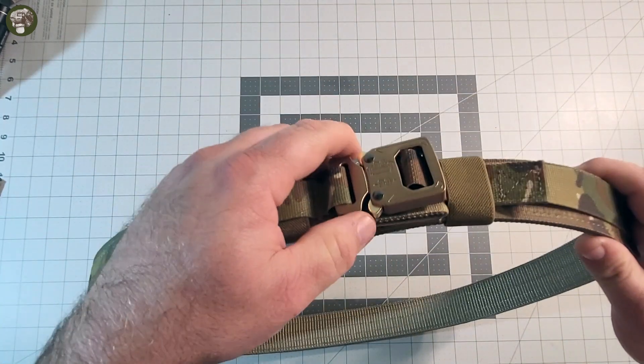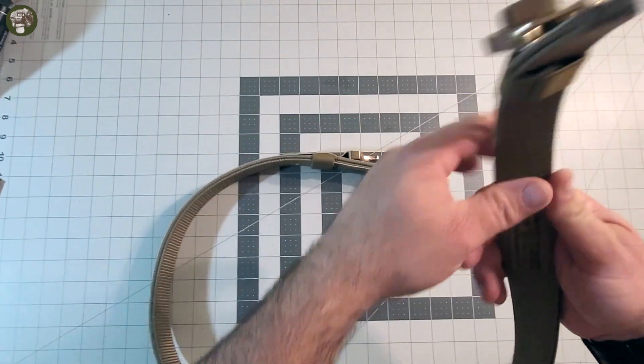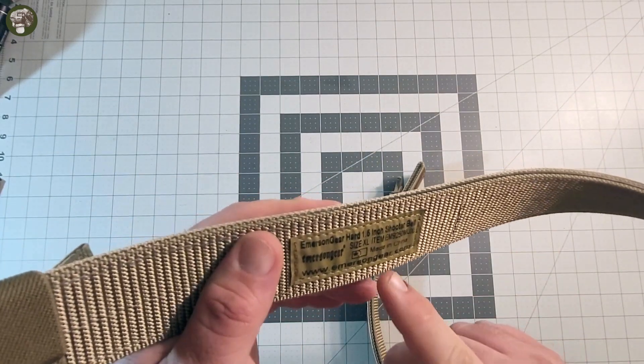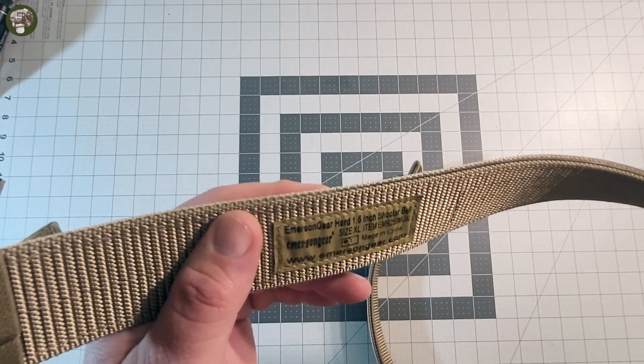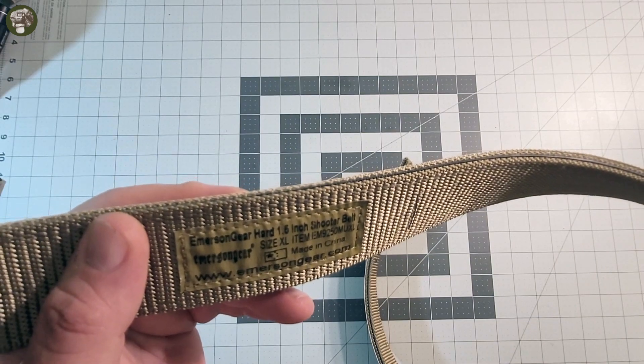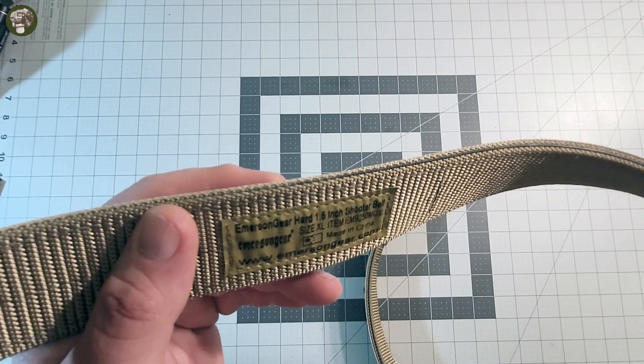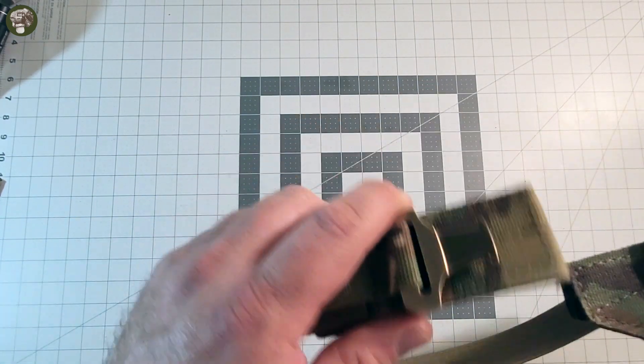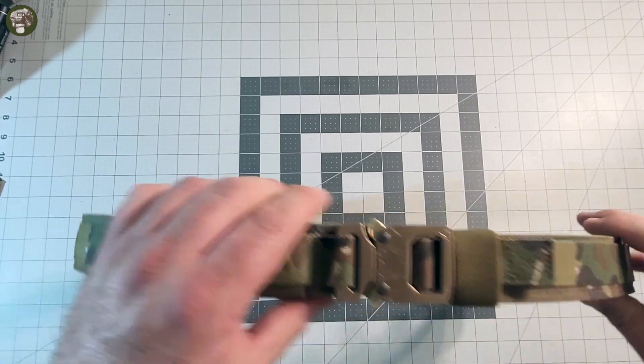And man, this is kind of a wonky belt, guys. Like I said, this is the Emerson Gear Hard 1.5 inch shooter belt, item number Echo Mic 9250 Mic Uniform. This is the XL, of course made in China for Emerson Gear. And this thing's a little weird, I'm not going to lie to you.